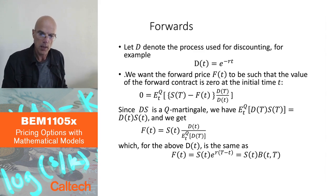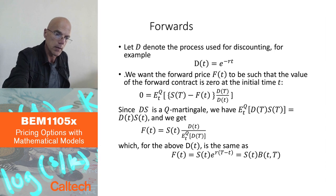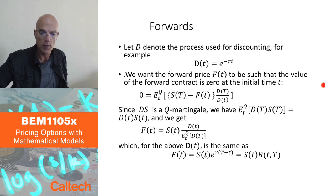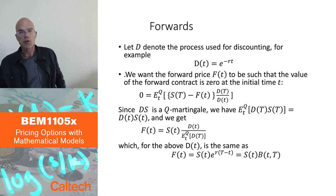So let me take any type of discounting, maybe with random rate, whatever. Let me denote by D the process used for discounting, which typically, for example, with continuously compounded rate, was e to the minus rT. And as we know, we want the forward price f(t) to be such that the value of the forward contract is zero at the initial time t.